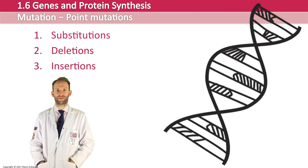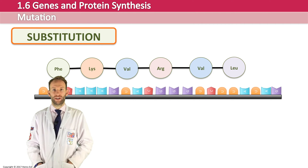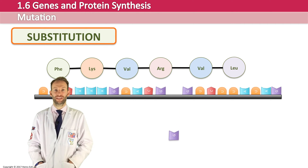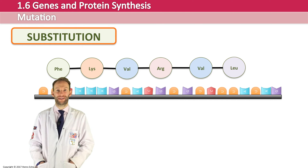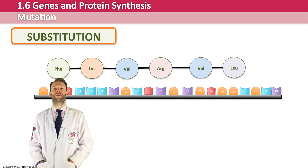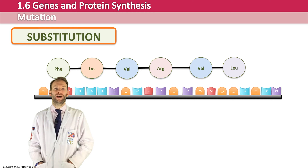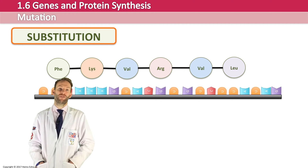Going through those three types: substitution is when one base is changed for another. Substitution is usually not that serious — it can alter a maximum of one amino acid. Quite often it has no effect even though it changes the codon, because of the degenerate genetic code — it may still code for the same amino acid. This is called a silent mutation.